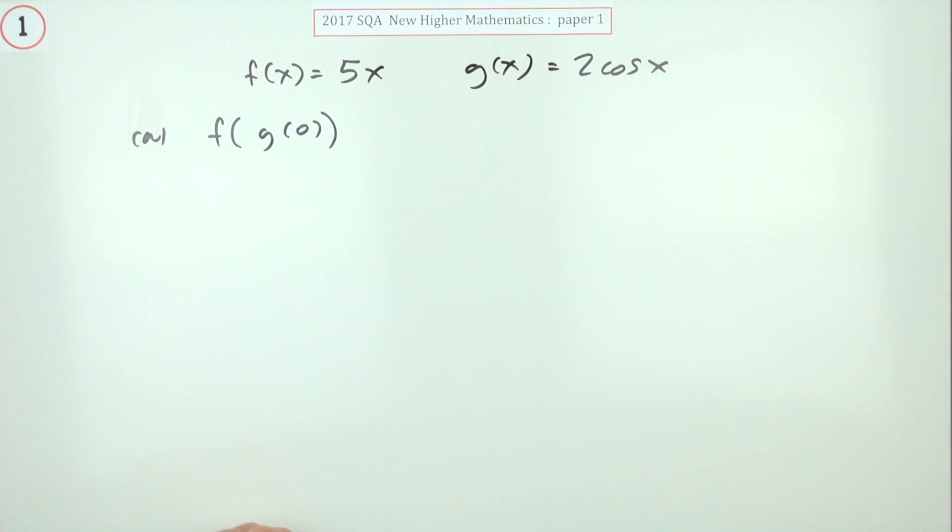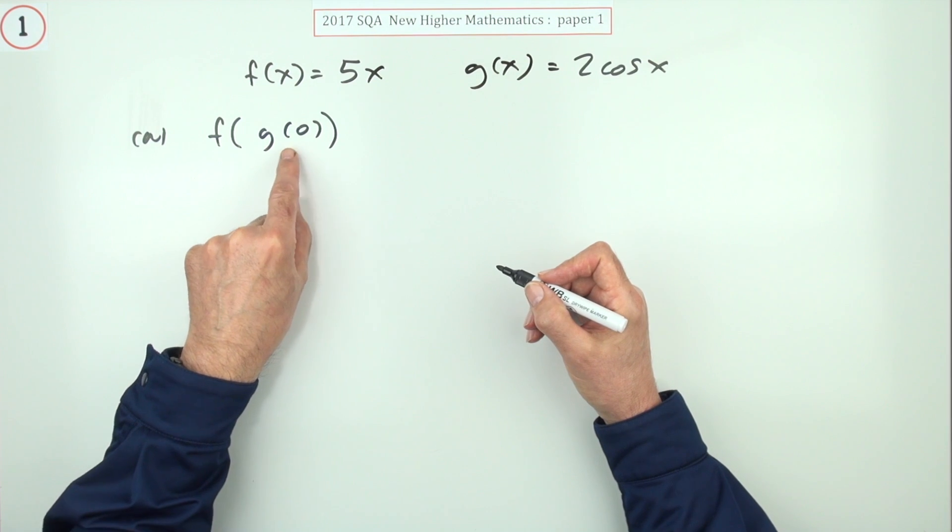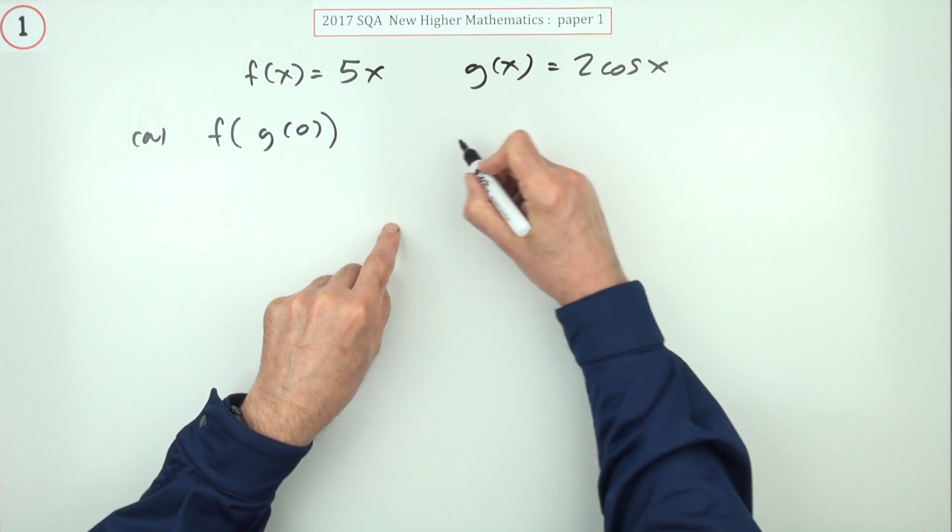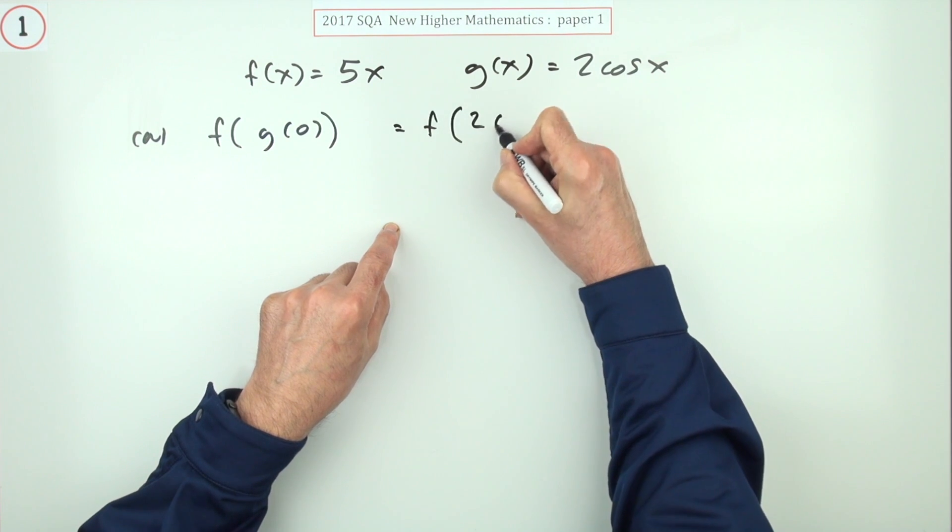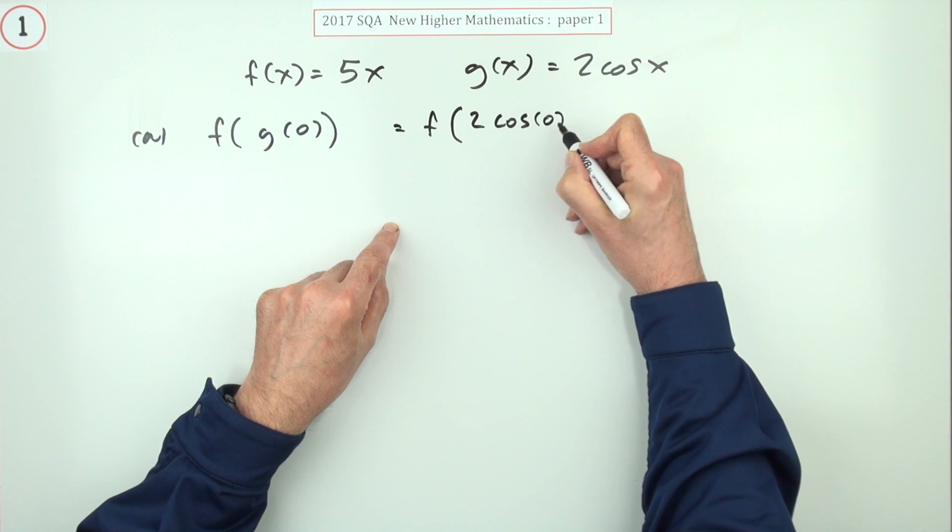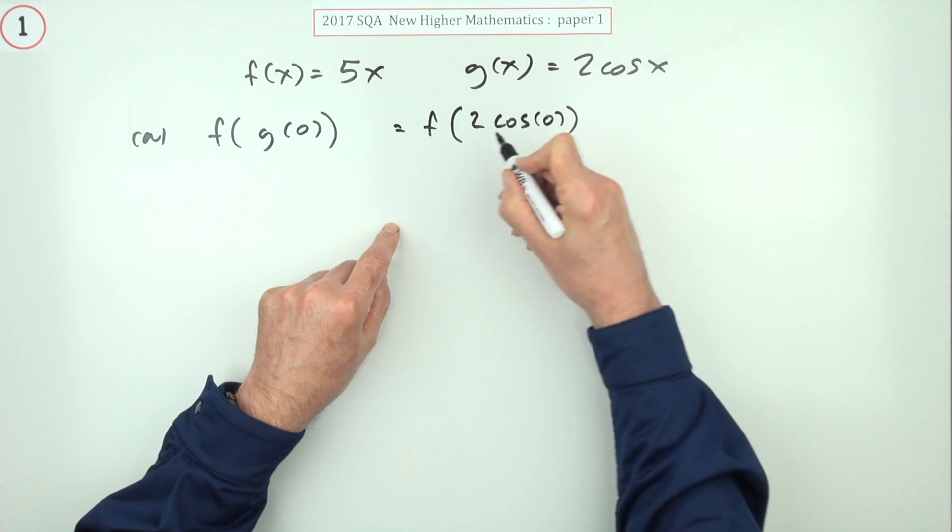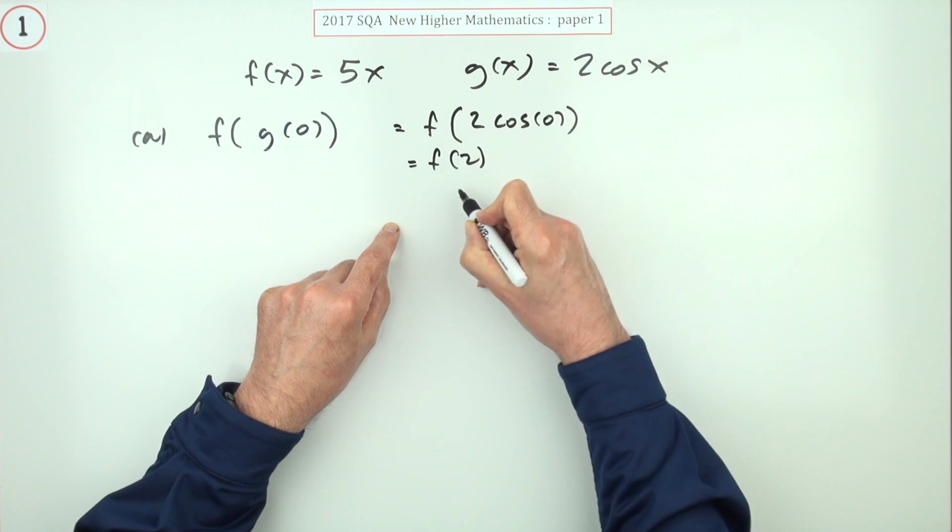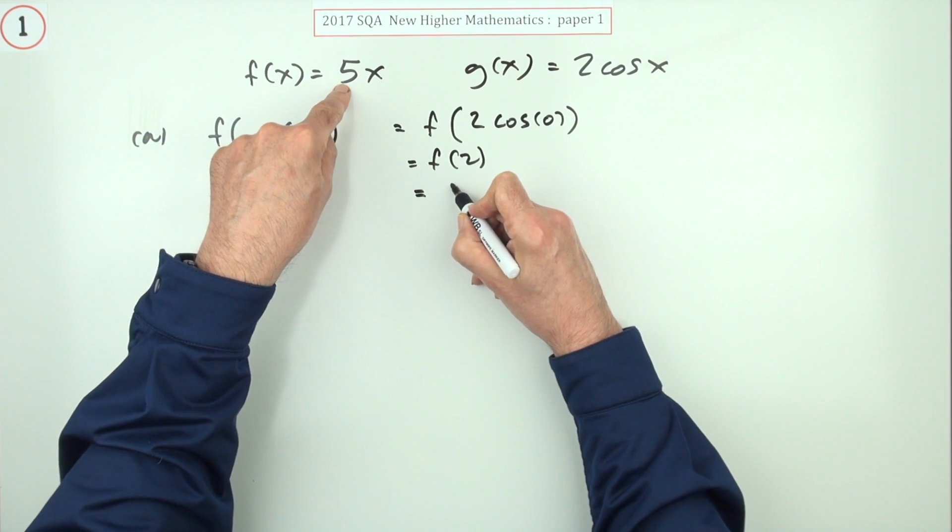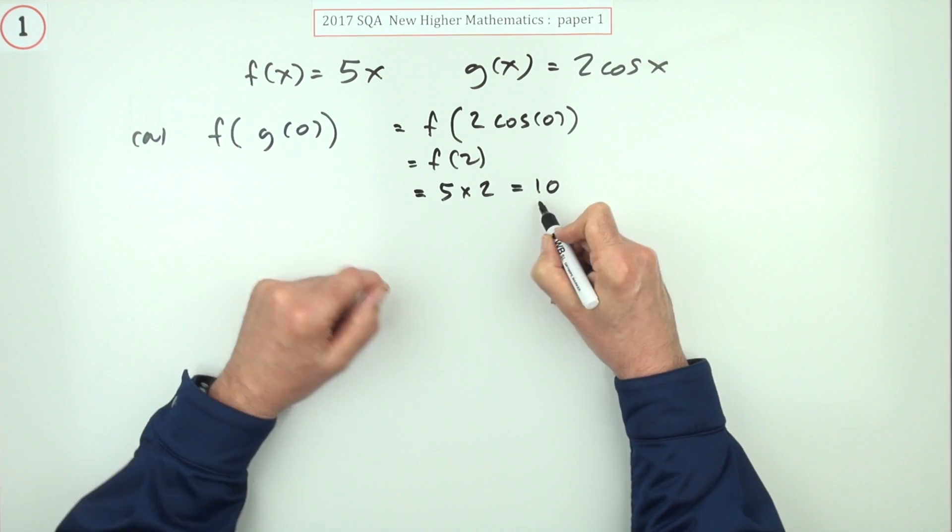One mark just for evaluating this. First of all, the part in the brackets, what is g of zero? When x is zero, you've got two cos zero. So that means that's equal to f of two. Two cos zero - the cosine of zero is one, cosine starts at one, so that's two. That's the same as the value of the function f at two. And what does f do? It does five times it. So it's five times two. The answer then is ten.